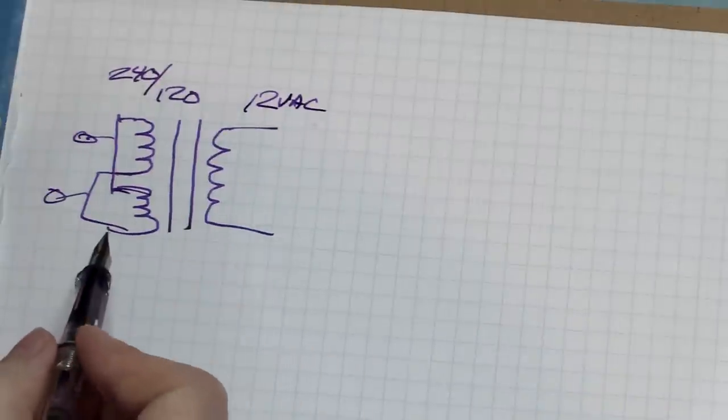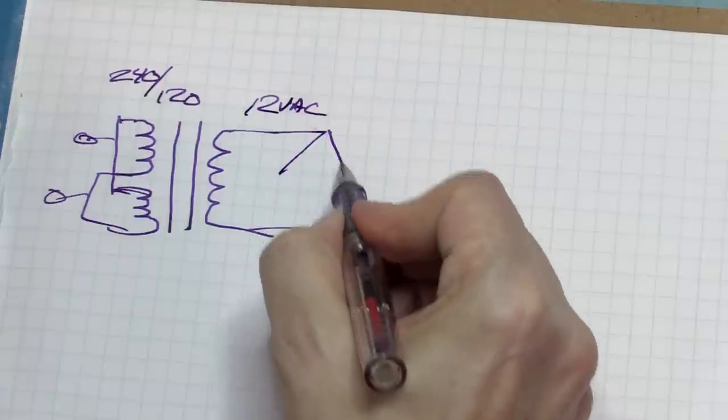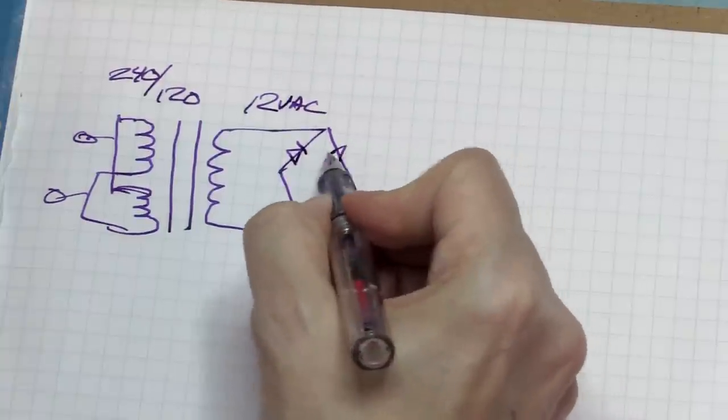The Heathkit has the primaries wired for 120, but it's really the secondary that's the issue - 12 volts AC. They use a full bridge rectifier, full wave bridge rectifier.